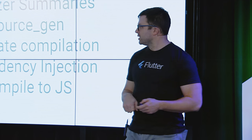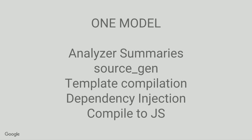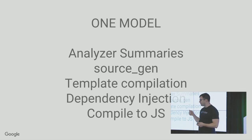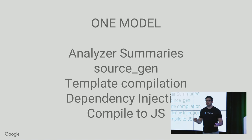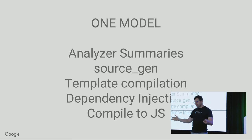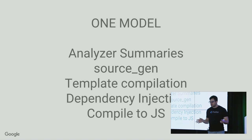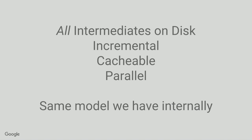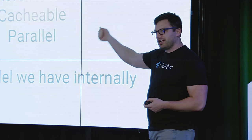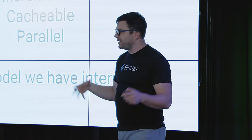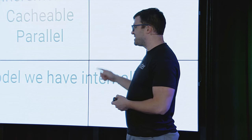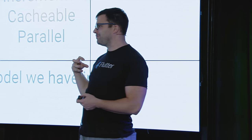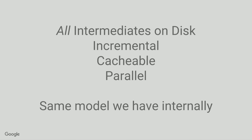What's beautiful about the Bazel model we use internally is it's one model. The way you generate summaries, the way you run source gen, template injection, even the way you compile to JavaScript — they're all one system. Generating JS is just another build output, along with how we generate summaries. Everything's on disk, which means your source maps and stack traces — you can go find those files. It's 100% incremental, even between builds, all cached. You can run things in parallel. It's the exact same model we have internally, so you get all the benefits we do.